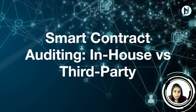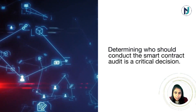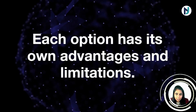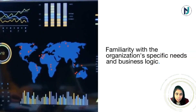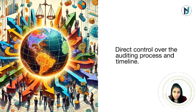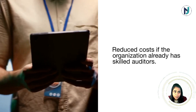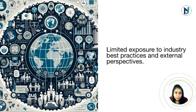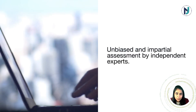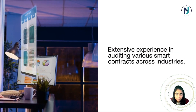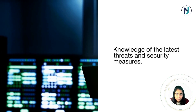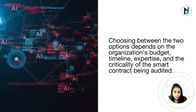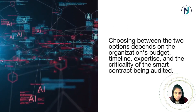Determining who should conduct the smart contract audit is a critical decision. Stakeholders can choose between an in-house audit team or a third-party auditor. In-house auditing advantages include familiarity with the organization's specific needs and business logic, direct control over the auditing process and timeline, and reduced cost if skilled auditors are already on staff. Limitations include potential biases and limited exposure to industry best practices. Third-party auditing offers an unbiased assessment by independent experts, extensive experience across industries, and knowledge of the latest threats, though it comes with higher costs and potentially longer turnaround times. Choosing between the two depends on the organization's budget, timeline, expertise, and the criticality of the smart contract being audited.